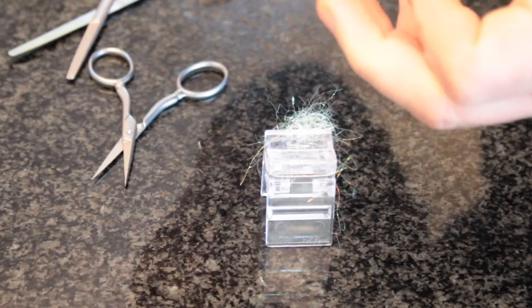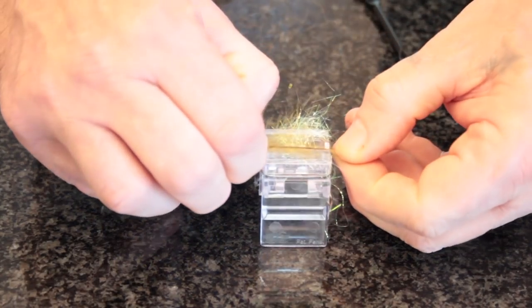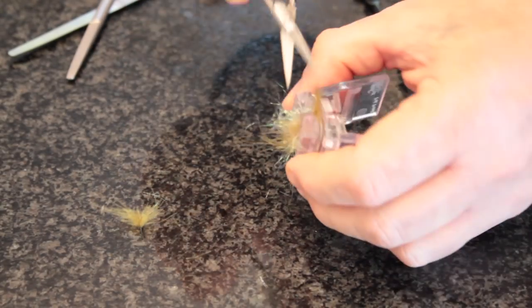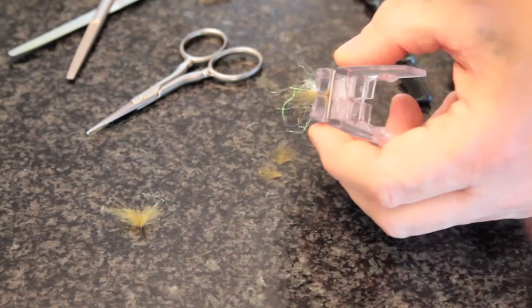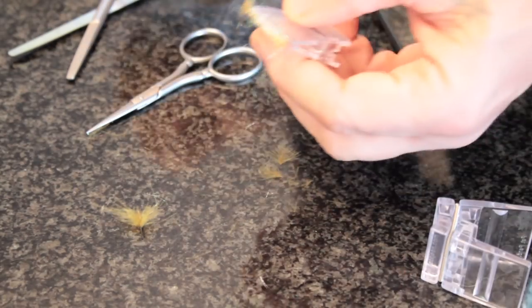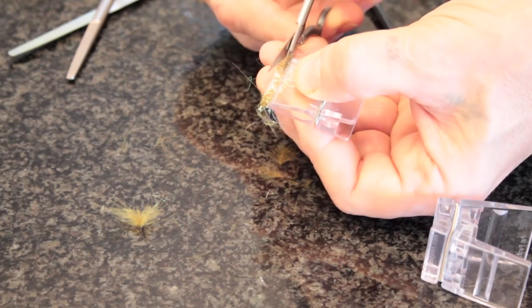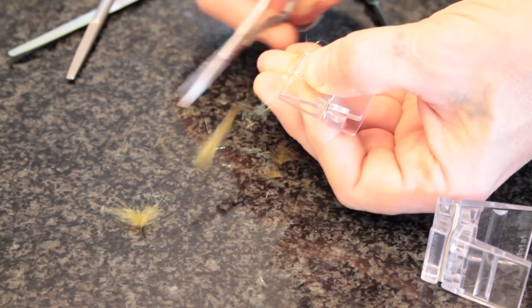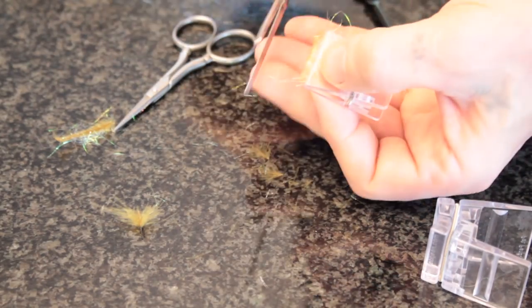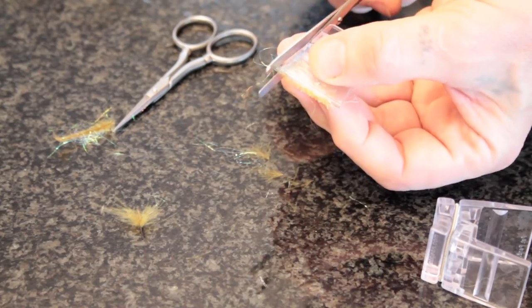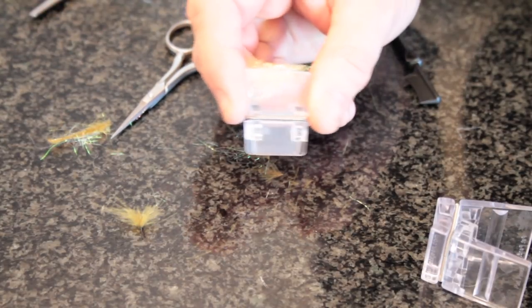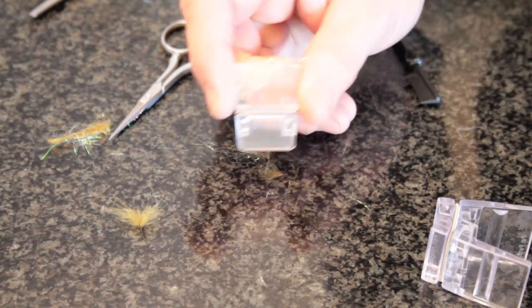I'm going to use two CDC hackles here. We do the same again: take both the hackles, put them on top of the dubbing, pull them in, trim off the edges. Take our clip, put this on the CDC, trim away the stems, and we have a mixture of ice dubbing and CDC, excellent for both wings if you want a sparkle wing and for nymph bodies.